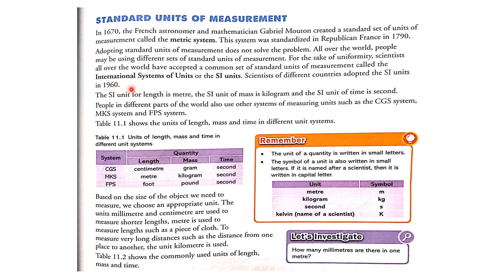The metric system was not solving the problem for people all around the world — it was only for some specific countries. So in 1960, scientists from all around the world adopted the International System of Units, or SI units, and from 1960 people have been using this SI system of measurement.